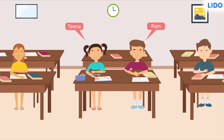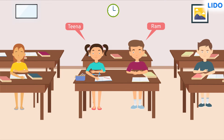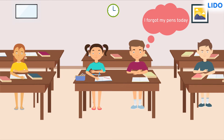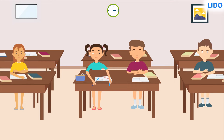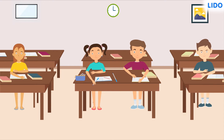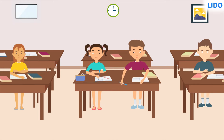Ram and Tina are attending their first chemistry class together. Ram forgot to carry his stationery. Seeing this, Tina immediately gives her pen to Ram. This creates a very good bond between them and now they are best friends.